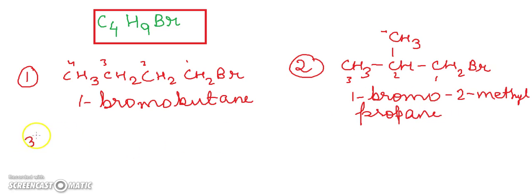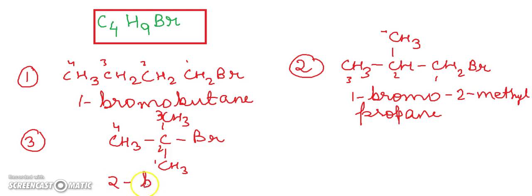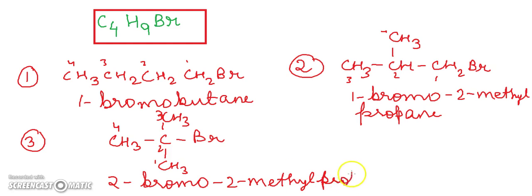The third isomer for the same molecular formula C4H9Br is CH3–C(CH3)(CH3)–Br. You can see we have one, two, three, and four carbon atoms, nine hydrogen atoms, and one halogen atom. The name of this compound is 2-bromo-2-methylpropane. So we have three isomers for the molecular formula C4H9Br — this is chain isomerism in haloalkanes.